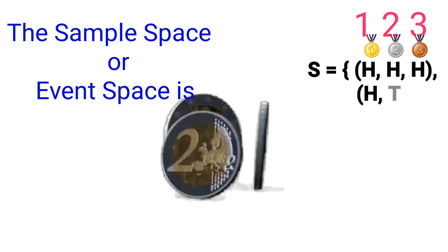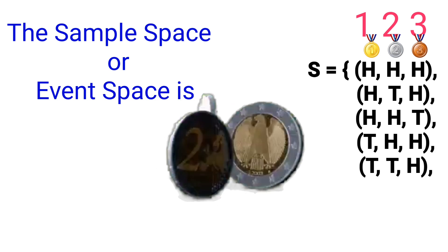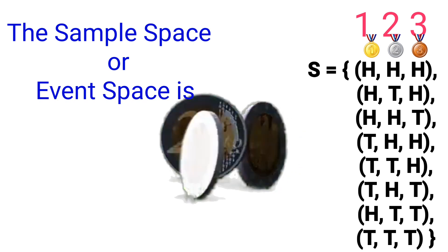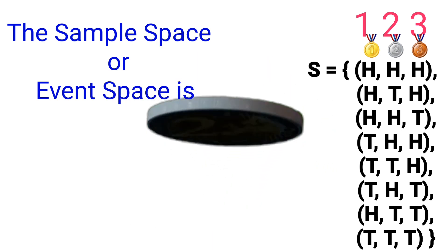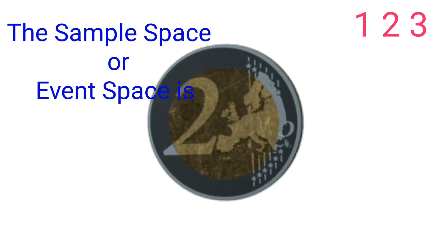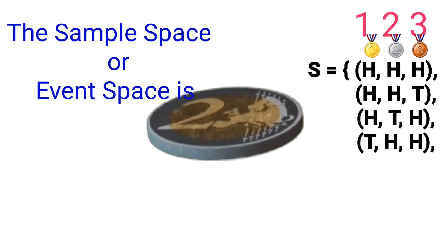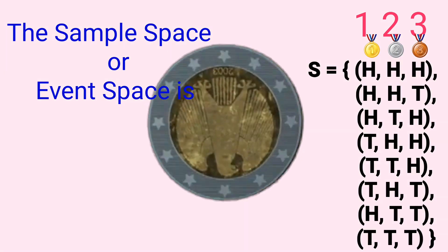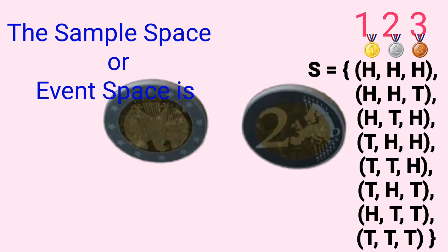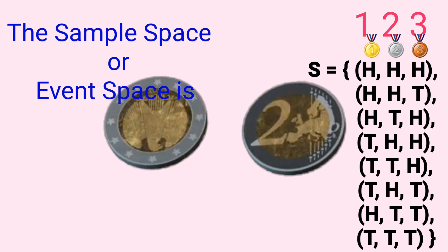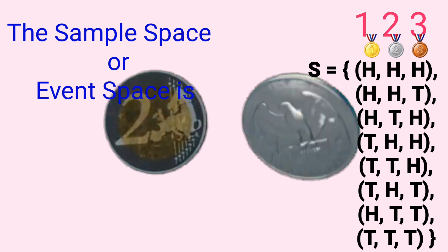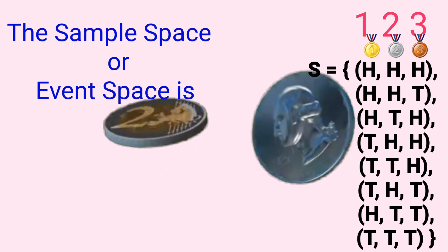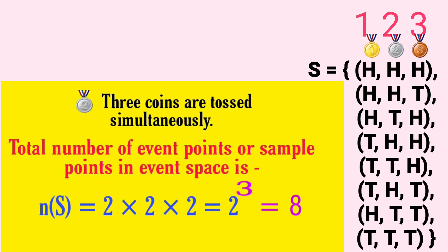Continuing, tail on any two coins and head on the other gives: TTH, THT, and HTT. Tail on all three coins gives TTT. Thus the sample space is S = {HHH, HHT, HTH, THH, HTT, THT, TTH, TTT}. The total number of points in the sample space is n(S) = 2 × 2 × 2 = 2³ = 8.